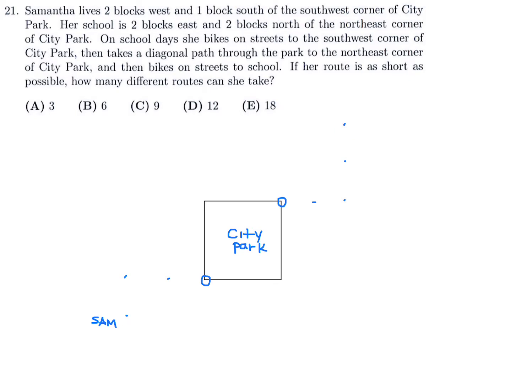They're asking how many different ways there are. The diagonal path across — that's just one way. There's only one way of doing that. But we have to figure out how to get from her home to the southwest corner, and then we'll talk about getting from the northeast corner to school.